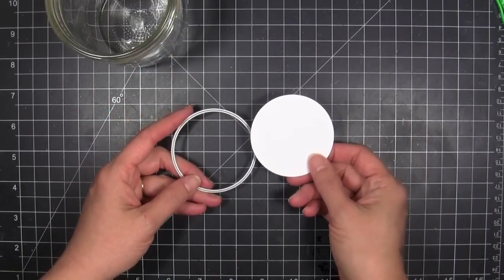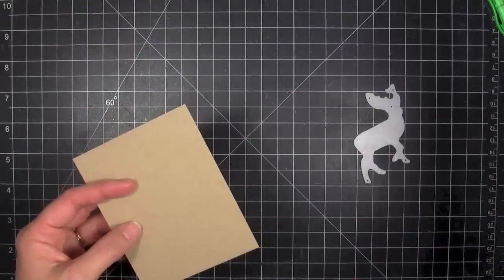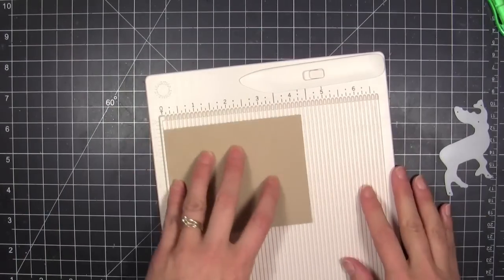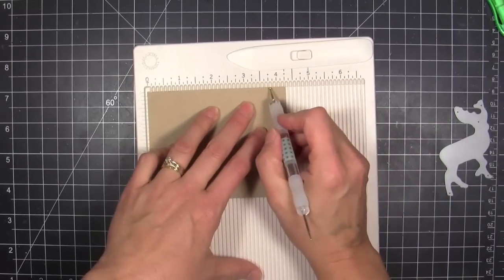To create my little scene, I'm going to die cut a circle that's going to go into the bottom of the jar. I just tested a circle die that fit inside the jar.